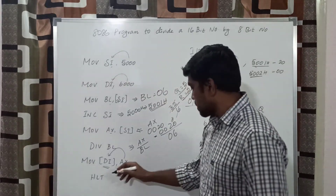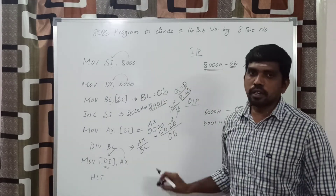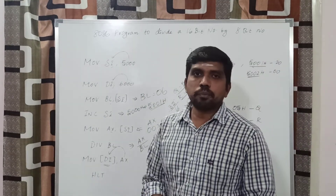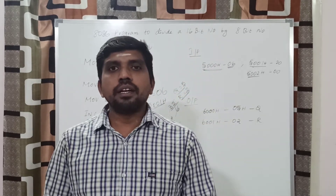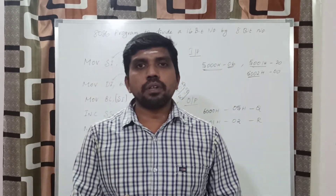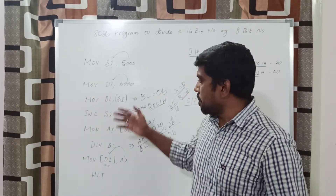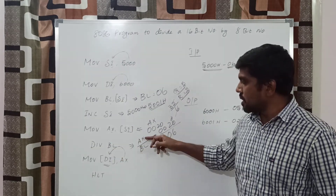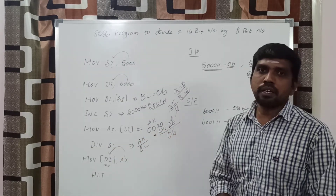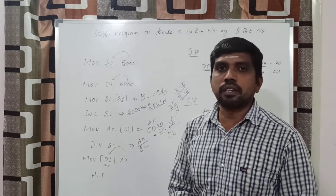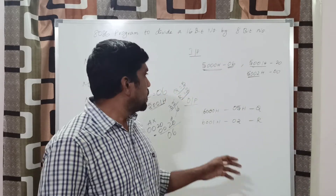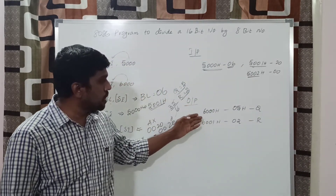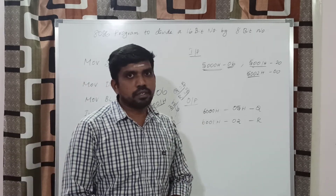The next instruction HALT declares the end of the program. Before writing the program, fix in your mind: declare the input and output memory locations and apply the division operation DIV BL. Dividing the AX content by BL content gives you the quotient and remainder, which are stored in memory locations 6000h and 6001h.